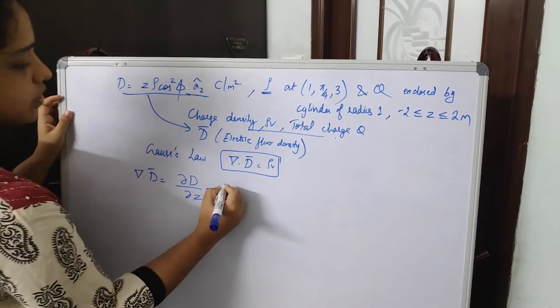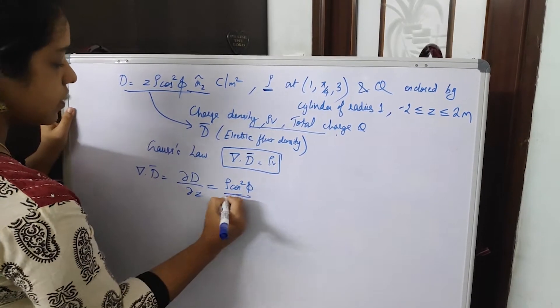So taking the derivative with respect to Z, you get rho cos square phi. So you got del dot D.